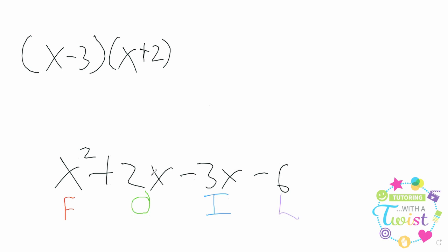Well, because we can combine these two terms. This 2x and that negative 3x, they can combine together. If you have two of something and you subtract three of that thing, you end up with negative 1. Oops, I'm going to be purple.